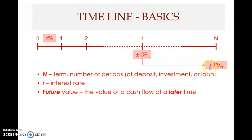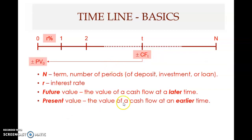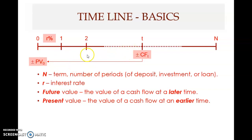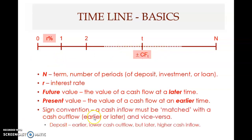Note that if the original cash flow is negative, its future value will be positive. Present value is the value of a cash flow at an earlier time. If a cash flow occurs at time t and you want to determine its value now at time zero, that is a present value problem. You can also find the value at time one — it is still present value since you're finding the value at an earlier time.